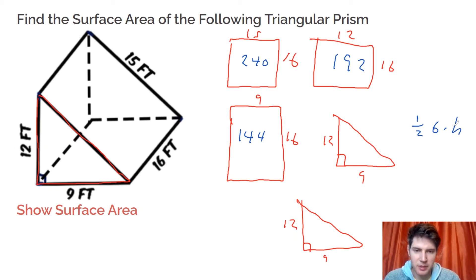So I'm going to have to do 12 times 9 divided by 2, which gives me 54. And then this triangle is the same as the other one, so it's also 54. So now we just add up all these blue numbers: 240 plus 192 plus 144 plus 54 plus 54, and the answer is 684.